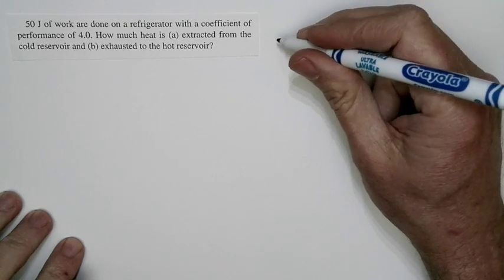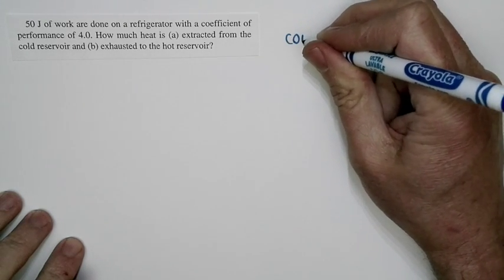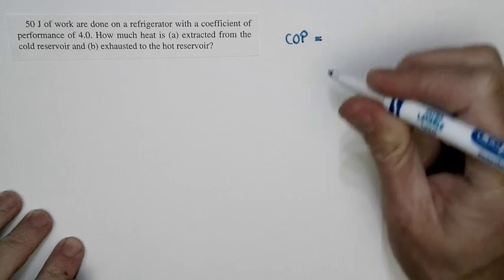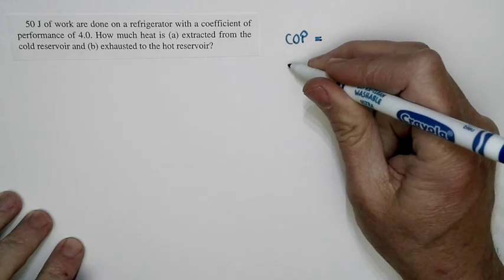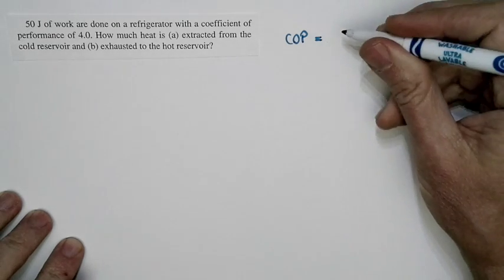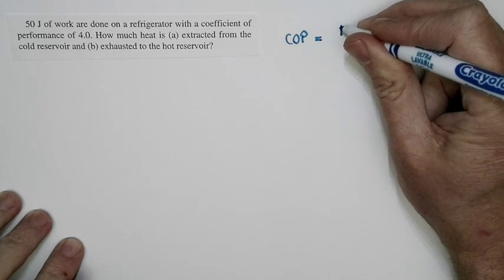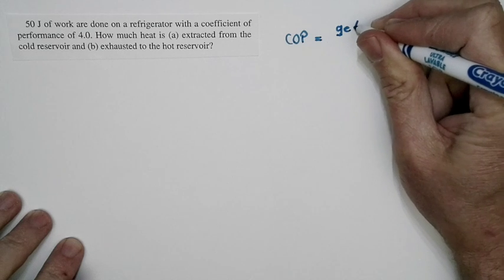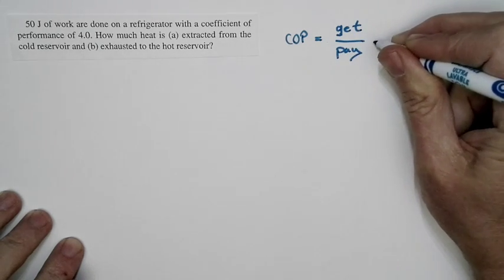Now, Chapter 11 is fundamentally about efficiency, but for refrigerators, we define it as a coefficient of performance, but basically, this is the same as an efficiency. And the coefficient of performance is basically, as for an efficiency, what you get divided by what you had to pay.